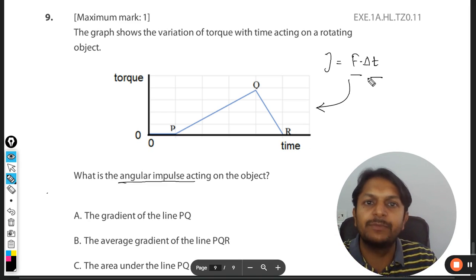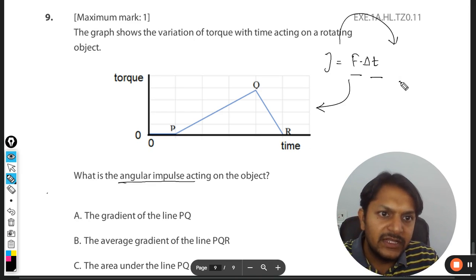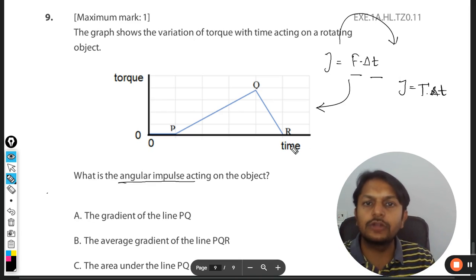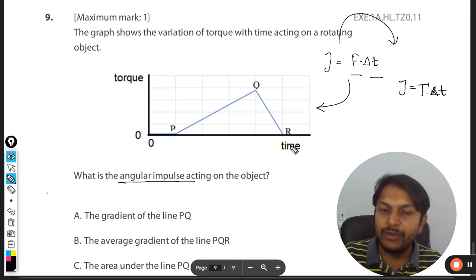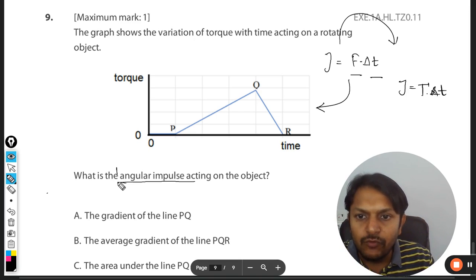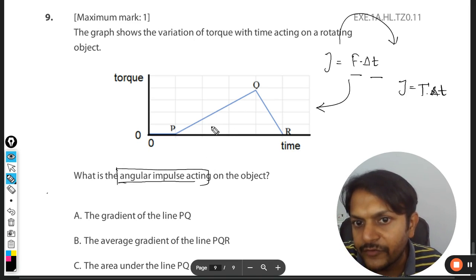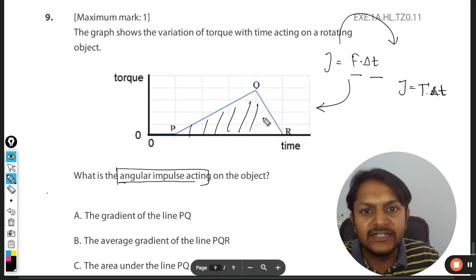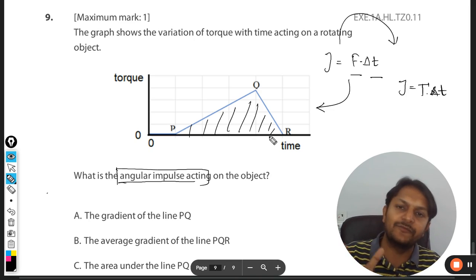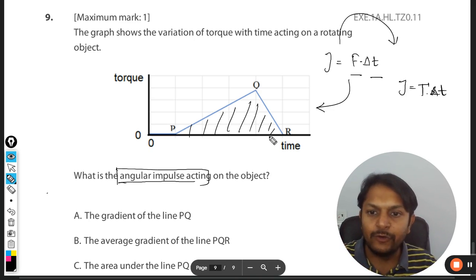So in the case of rotation, the impulse will be given as torque multiplied by delta t, so it is torque multiplied by time. That is impulse. So clearly in this case, if you want to find the angular impulse, we have to find the area under the curve, complete area, that is PQR. This triangle we have to find and that will be the angular impulse.